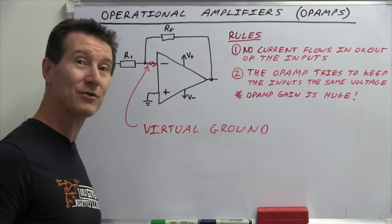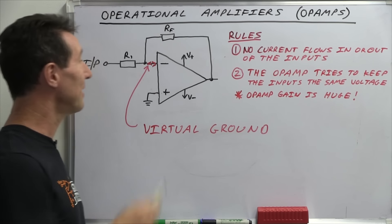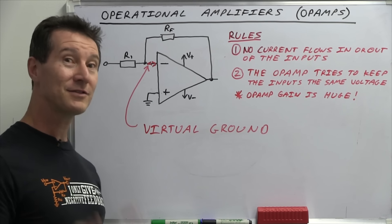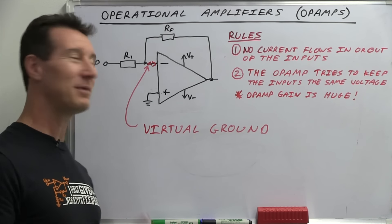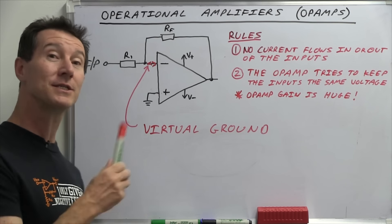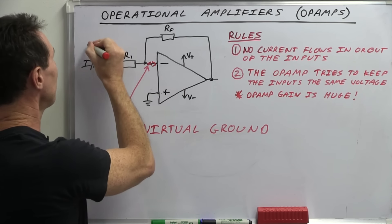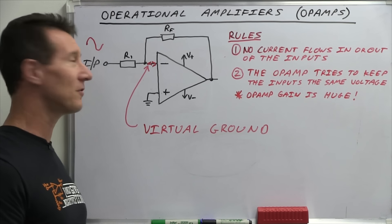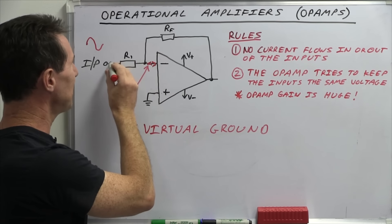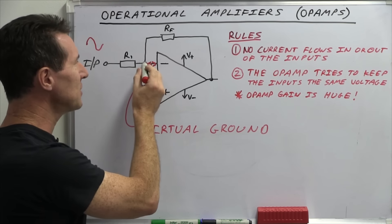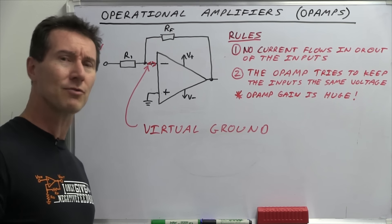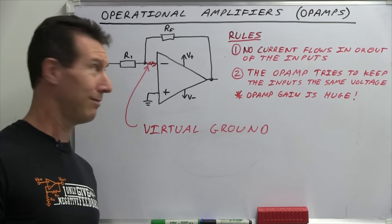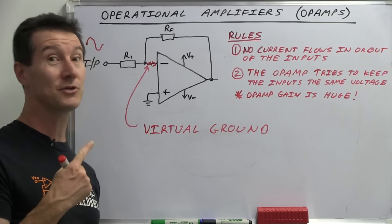Trust me, we'll do a practical measurement in a minute, and this node here will actually be zero volts. This confuses the heck out of a lot of beginners. They build up their op amp circuit, start probing around, they've got their input signal — say a one kilohertz, one volt sine wave. They measure this side of the resistor and the signal's there. They measure the other side of the resistor and it's ground. The signal's vanished. Where's it gone? Strange, but true.